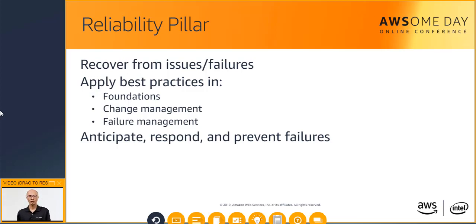Before architecting any sort of structure, it is critical to look at the foundation before construction. Similarly in the cloud, before architecting any system, foundational requirements that influence reliability should be in place. With change management, it is really important to fully understand how change can affect your system — if you plan proactively and monitor your systems, you can accommodate and adjust to change quickly and reliably. To make sure your architecture is reliable, it is key to anticipate, be aware of, respond to, and prevent failures. In a cloud environment, you can take advantage of automation with monitoring, replace systems, and troubleshoot failed systems at low cost while still being reliable.